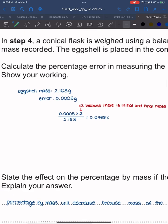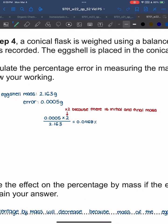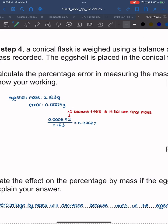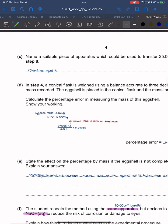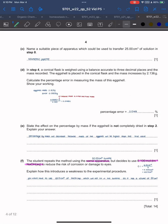Calculate the percentage error using the mass of the eggshell. Actual mass is 2.136 grams. The error is the last decimal point divided by 2, which is 0.0005. To calculate percentage error, multiply by 2 because there's initial and final mass, then divide by 2.136 and multiply by 100 to get 0.0468%.